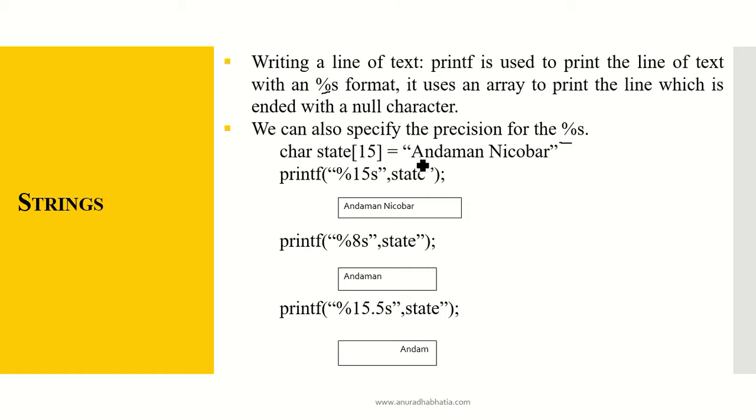Character state[15] equals Andaman Nicobar. This is the input string to my variable state. When I say printf %15s, so 15 characters will be printed. This will be my output.